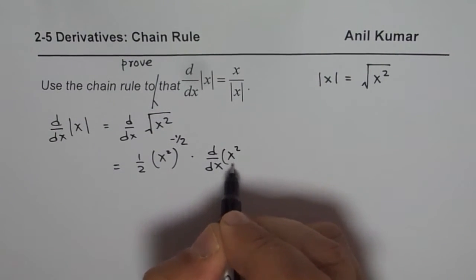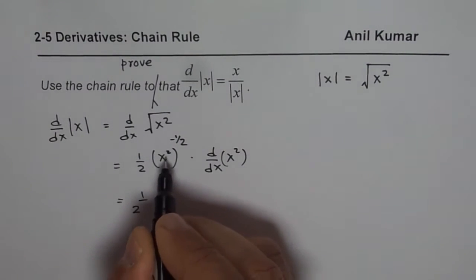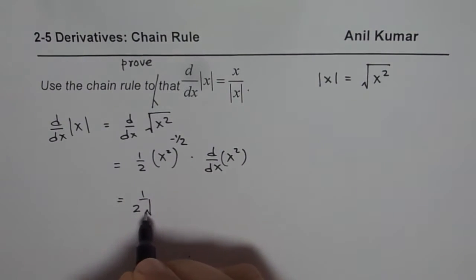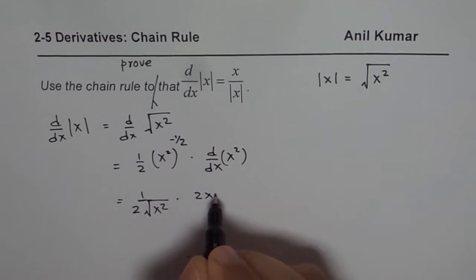Derivative of x square. So that gives you half, so 1 over 2, and that is square root of x square, times derivative of x square is 2x.